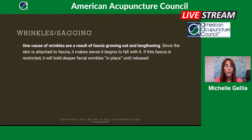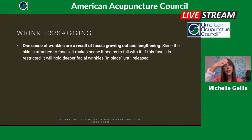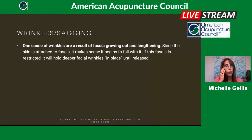When we think of wrinkles, we think of something that happens as we age — often from sun damage or the skin getting older. But also, if you habitually make an expression and the skin is attached to the fascia, and if that fascia is restricted at all, you can end up with deep wrinkles. Sometimes wrinkles and sagging are reversible just by doing things to the fascia layer.